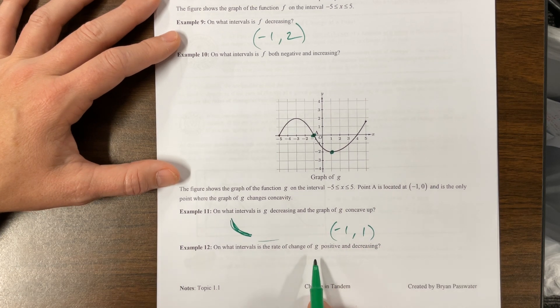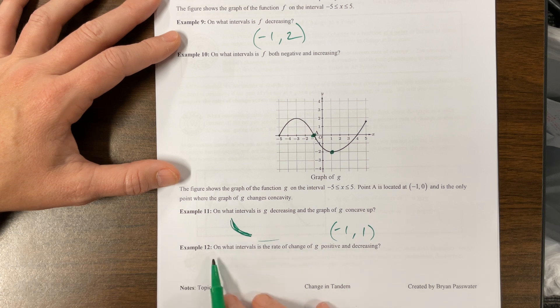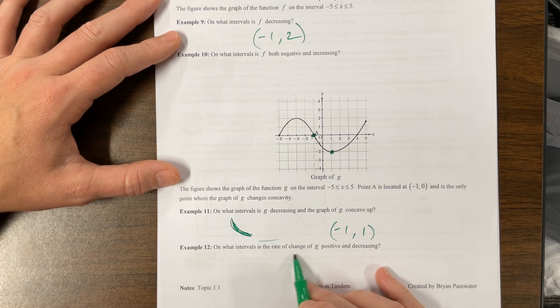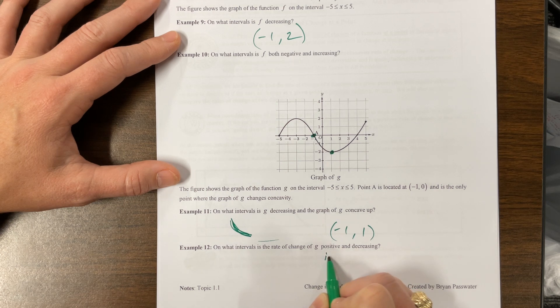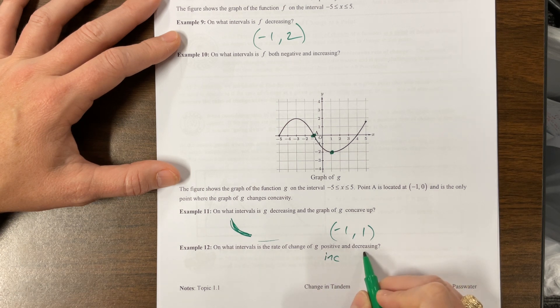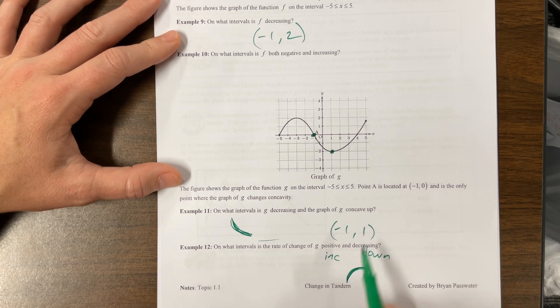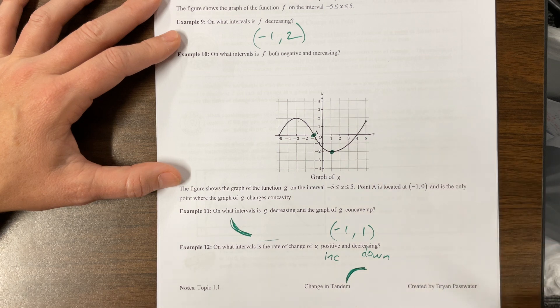On what intervals is the rate of change positive, the rate of change. Okay. So notice this was talking about G and now this is talking about rate of change. So the rate of change is positive. That means my graph is increasing and decreasing. That means it's concave down. Okay. So increasing and concave down will look something like that, which is negative five to negative three.